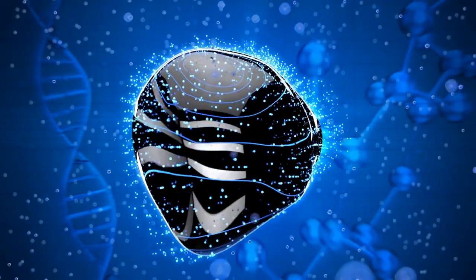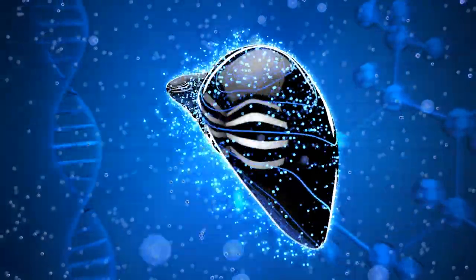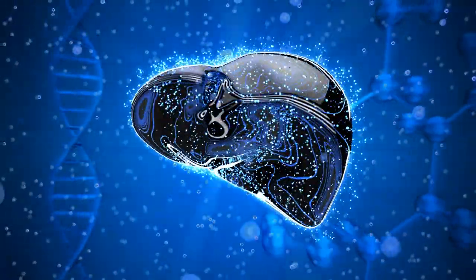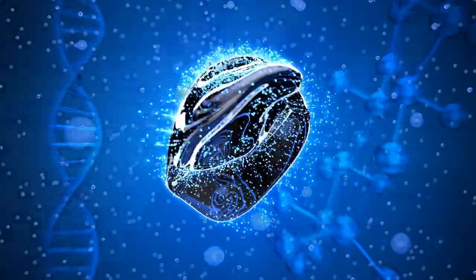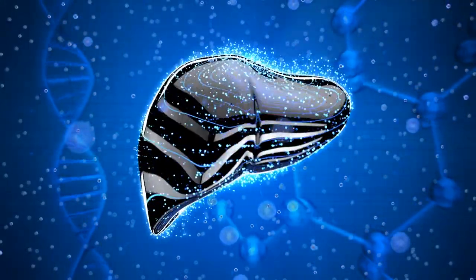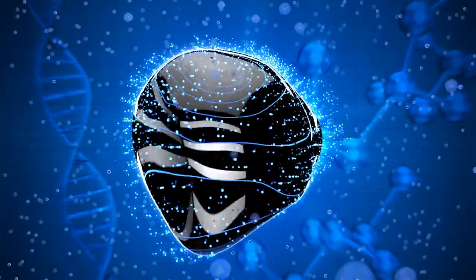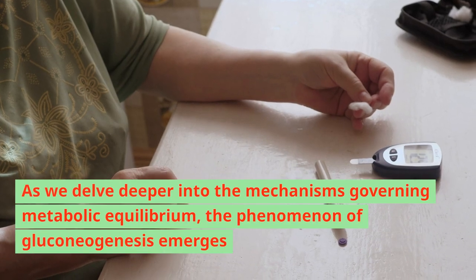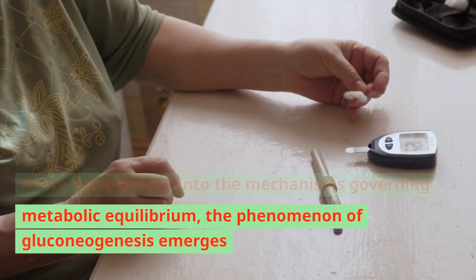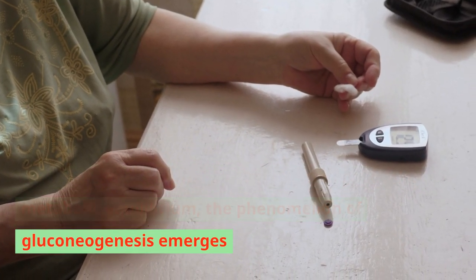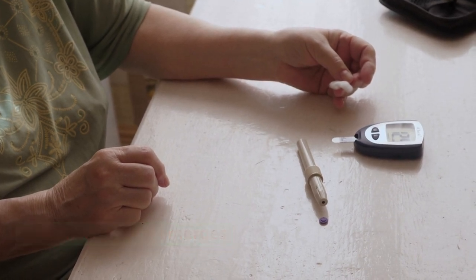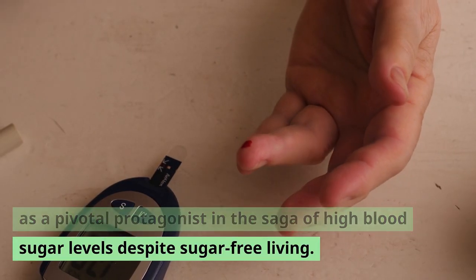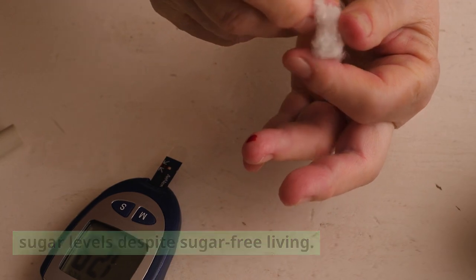The answer lies in the intricate dance of physiology, where the liver and kidneys perform a clandestine act known as gluconeogenesis, ushering sugar into the bloodstream from non-carbohydrate sources. As we delve deeper into the mechanisms governing metabolic equilibrium, the phenomenon of gluconeogenesis emerges as a pivotal protagonist in the saga of high blood sugar levels despite sugar-free living.